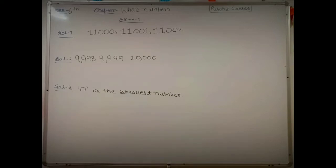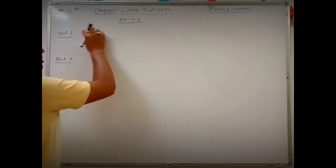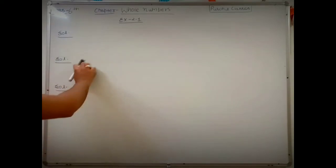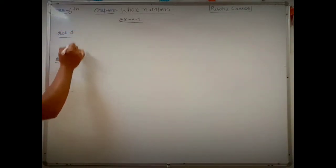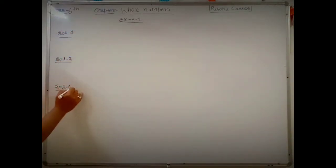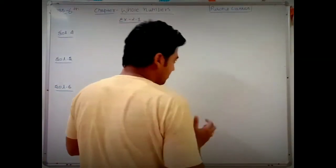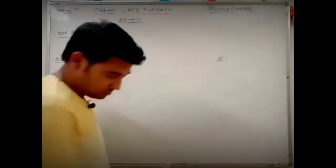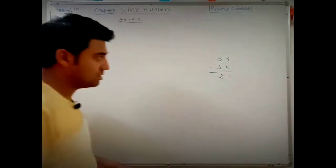Question 4 is very important and most students will make a mistake due to carelessness. The question asks: how many numbers are there between 32 and 53? Most students will compute 53 minus 32 and say there are 21 numbers.